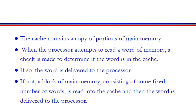Cache will maintain a copy of data for future use. If in future program execution that data is required by the processor, cache memory will directly provide it and the time to access main memory will be saved. In this way cache memory provides relatively faster access for the processor to access and manipulate data.